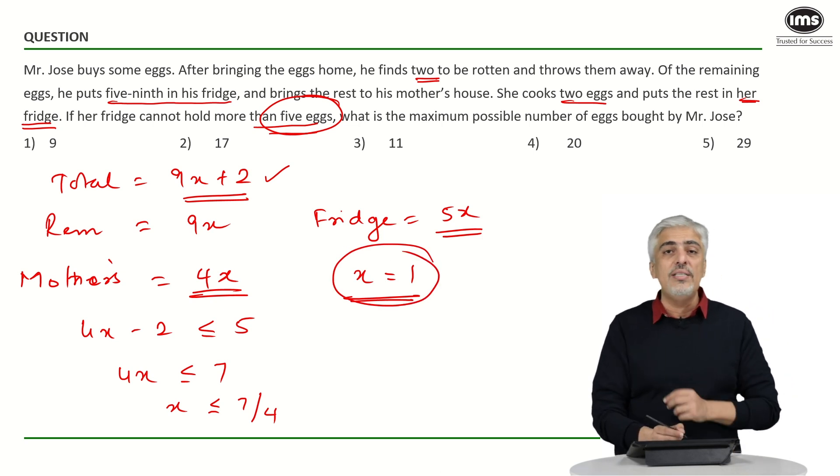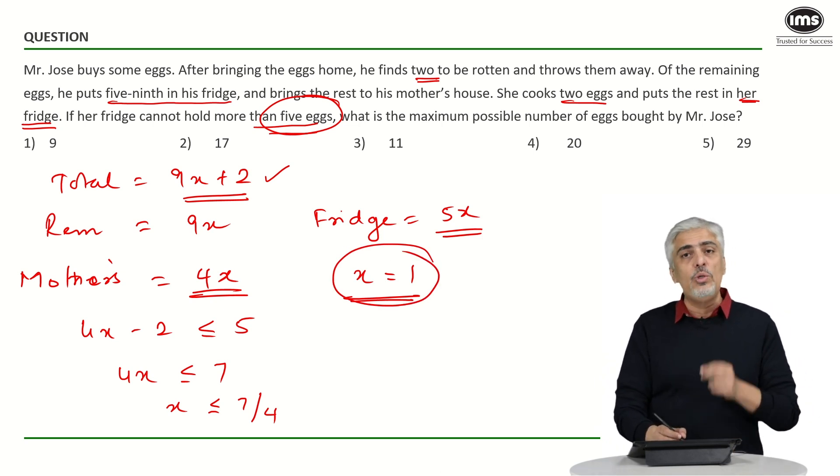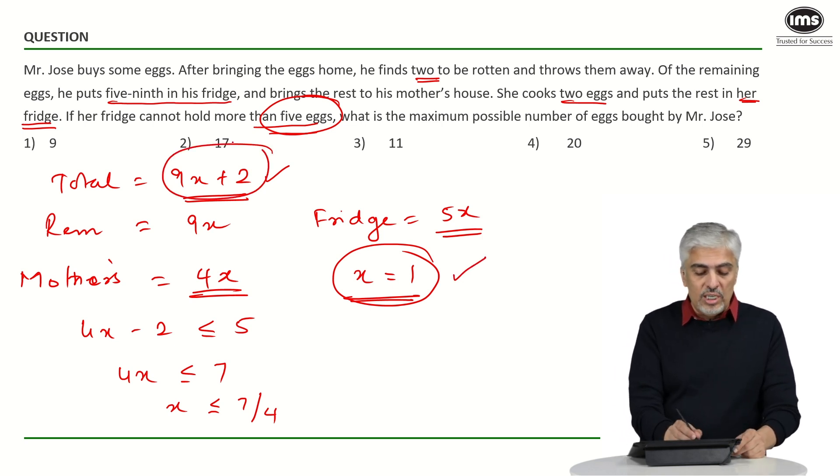Now you know this is where students get confused in Z. Lot of people would do all this right and still not get the question right. Looking at words like at least, less than, greater than. Inequalities becomes a very important topic for that. So always do that topic really well. So we've got x is equal to 1. Just put it over, your total number of eggs will be 9 into 1 plus 2. That will be 9 plus 2, 11 eggs. And answer is the third option.